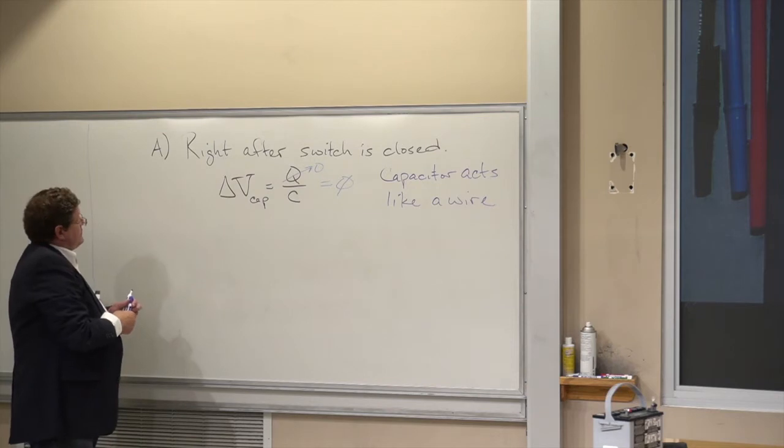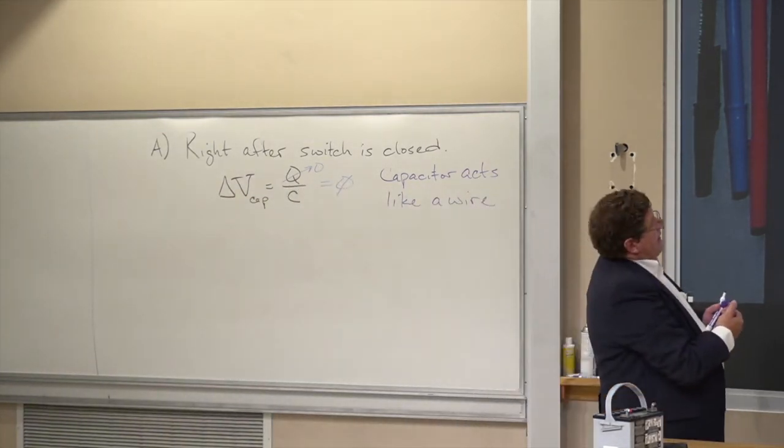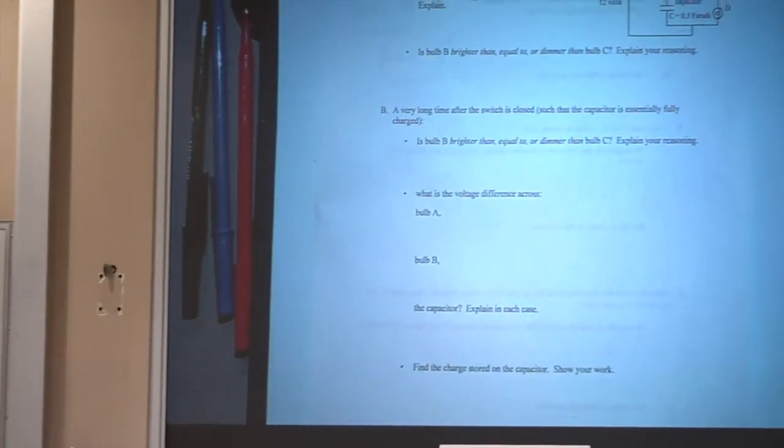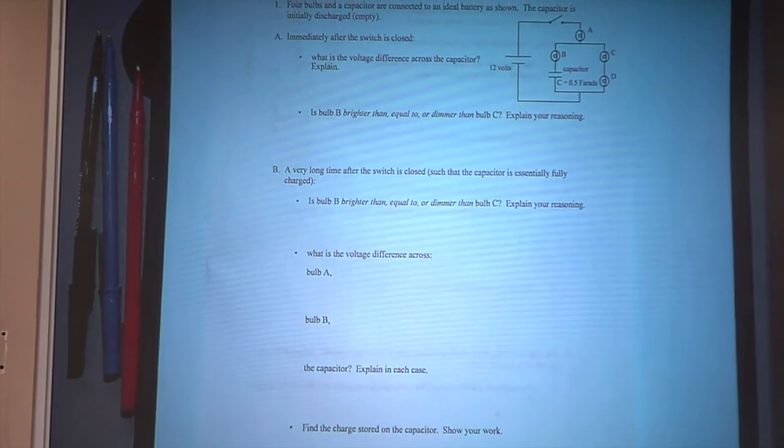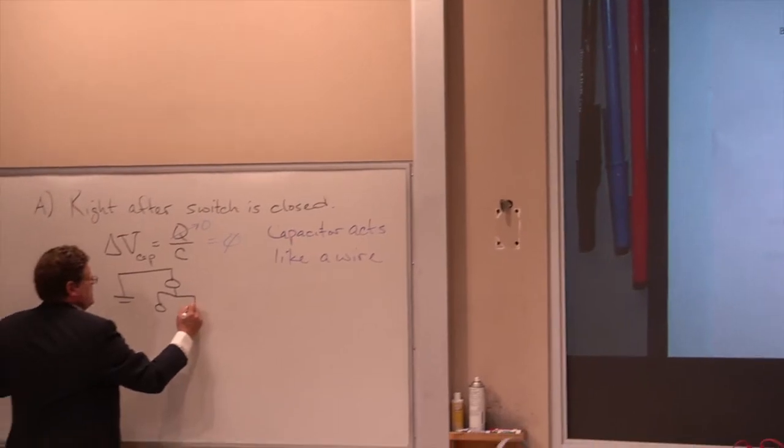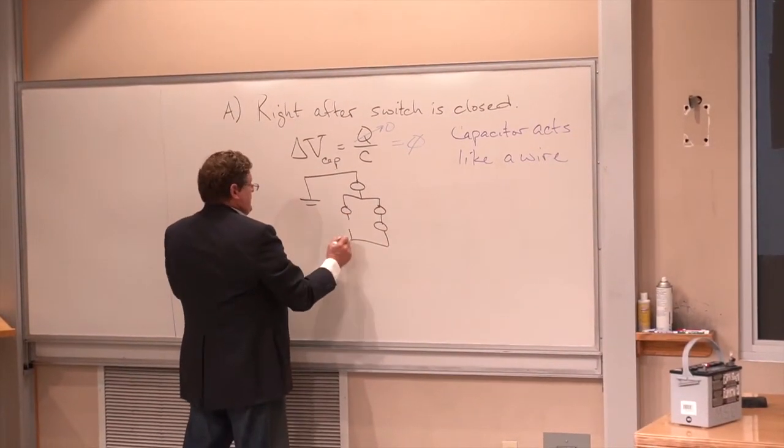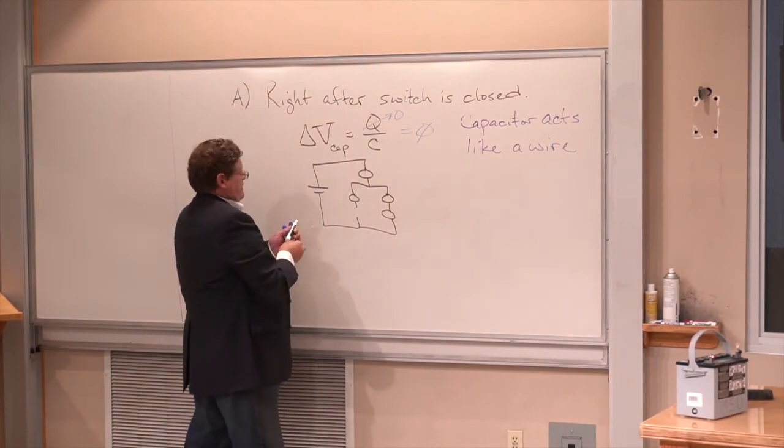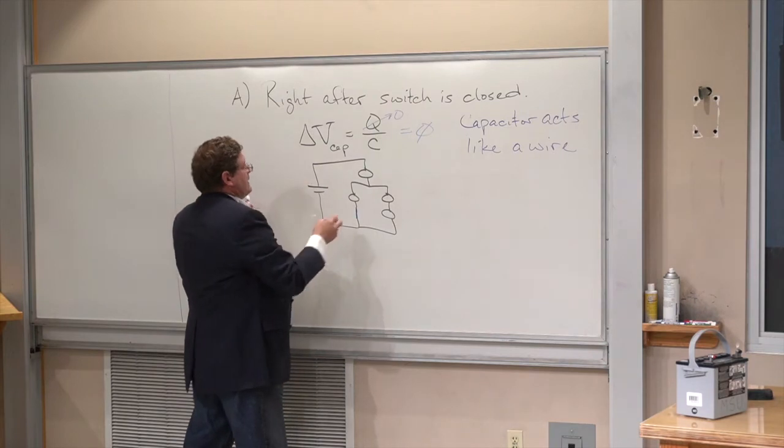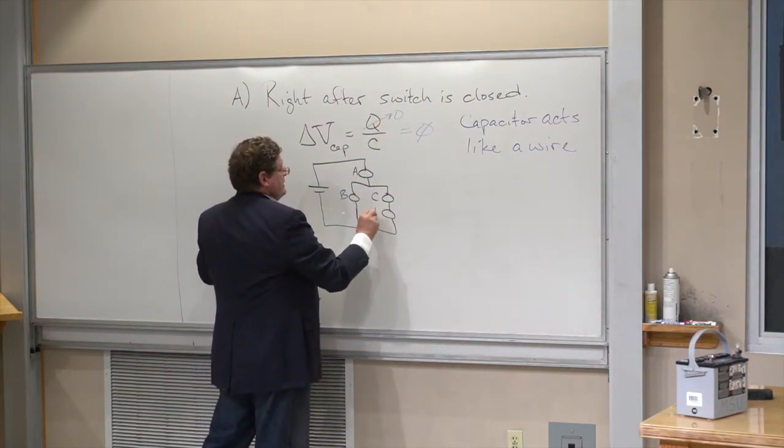So let's look at this circuit here. If the capacitor is acting like a wire, I can redraw that circuit. There's the wire right here, and this is bulb A, B, C, and D.